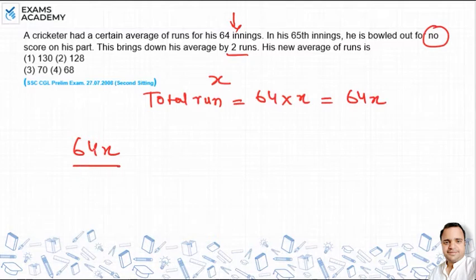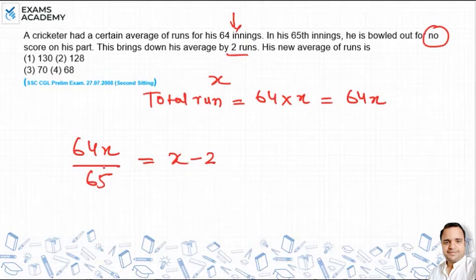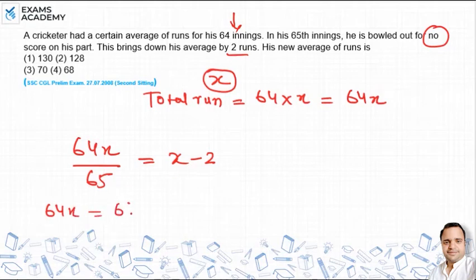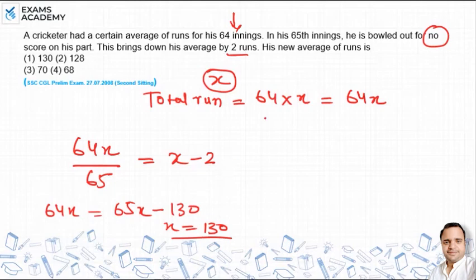Dividing total runs by 65 innings, the new average is 64x divided by 65. Let x be the initial average. Now the new average is x minus 2. So: 64x divided by 65 equals x minus 2. Solving: 64x equals 65x minus 130, which gives x equals 130. So the initial average is 130.